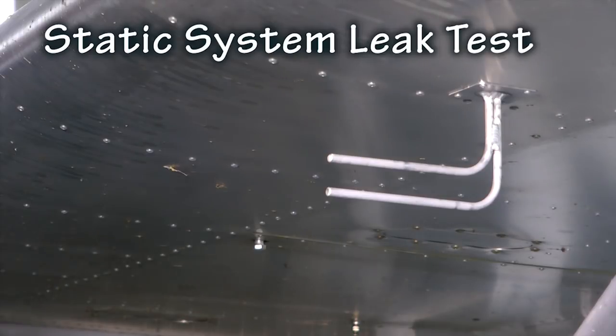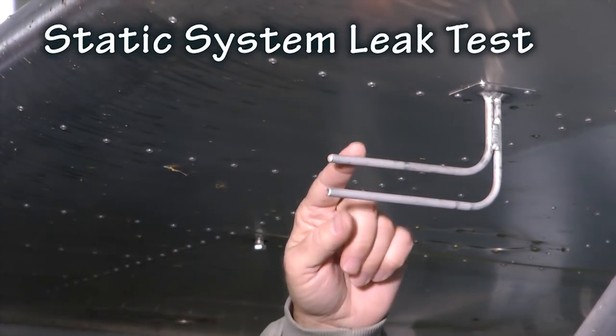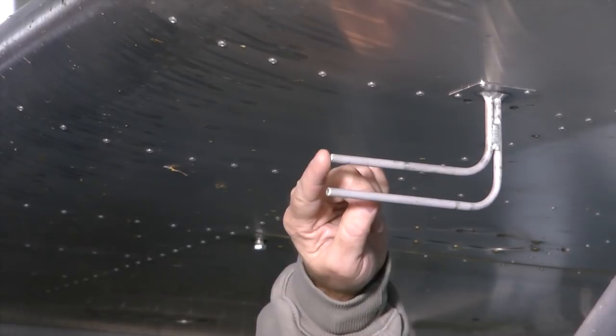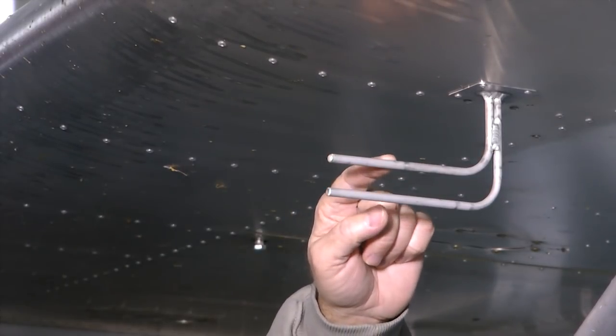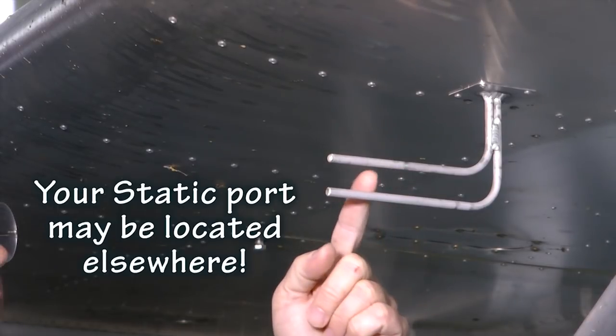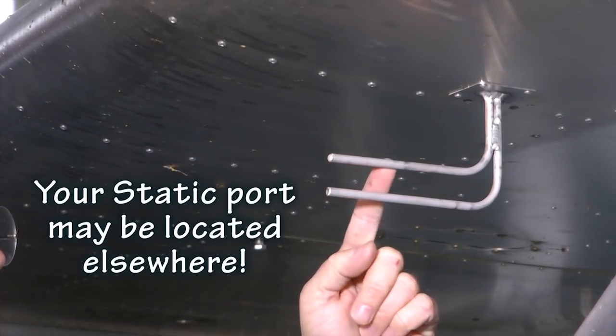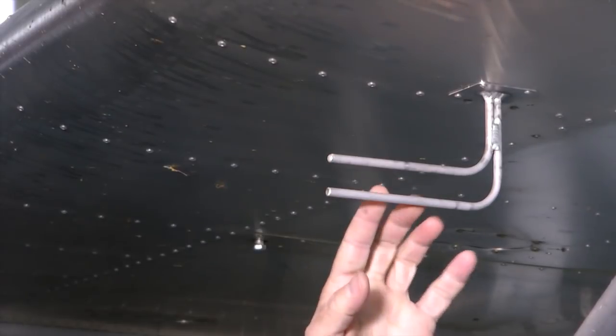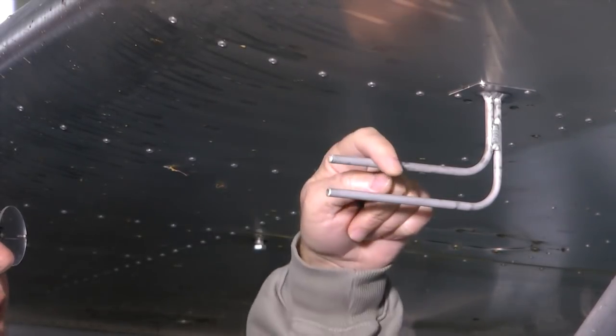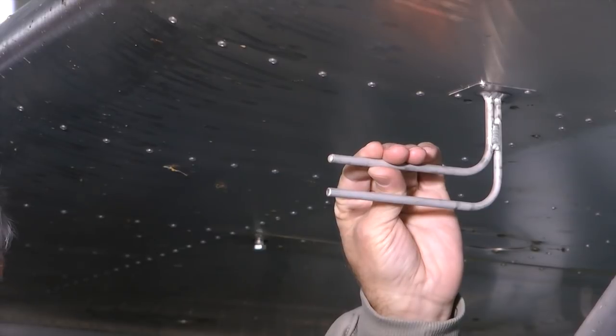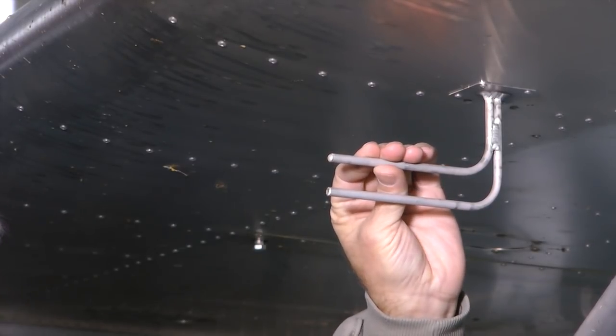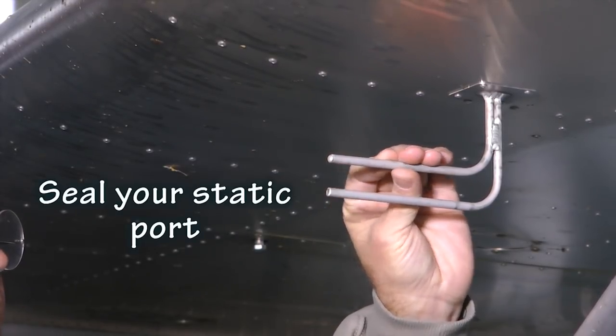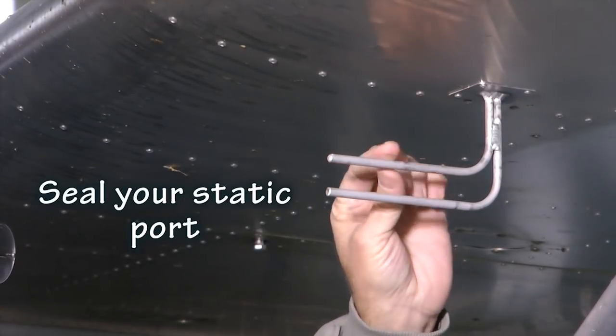When we are done, we can simply remove the hose from the pitot and that will release the pressure. For testing the static system, I can't simply put a tube over my static port because this end is sealed. I have a couple of tiny holes located in the surface of this tube, so what I am going to do is simply put a piece of tape around my tiny holes and seal this off so that we are sealed from the atmosphere on my static ports. Then I am going to go locate the plastic static line and tap into it with my syringe.